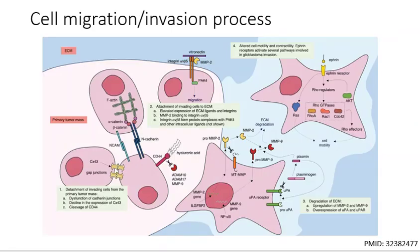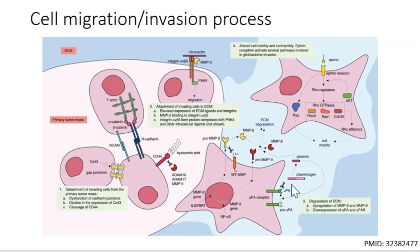Another process is invasion and migration. As many surgeons are aware, there are often tumor cells beyond what we can see with the naked eye. The process occurs through detachment from the primary tumor mass — via cleavage of CD44 or the cadherins — followed by sequential adhesion to the ECM. At the ECM, degradation occurs by matrix metalloproteinases MMP-2 and MMP-9, followed by altered cell mobility and contractility enabling movement through the ECM.